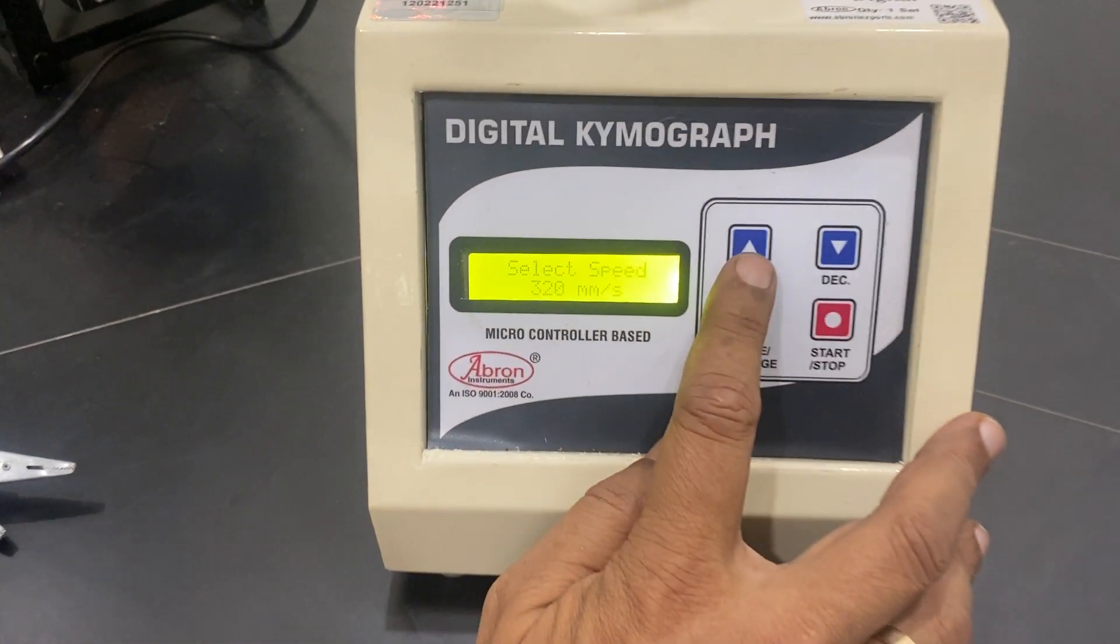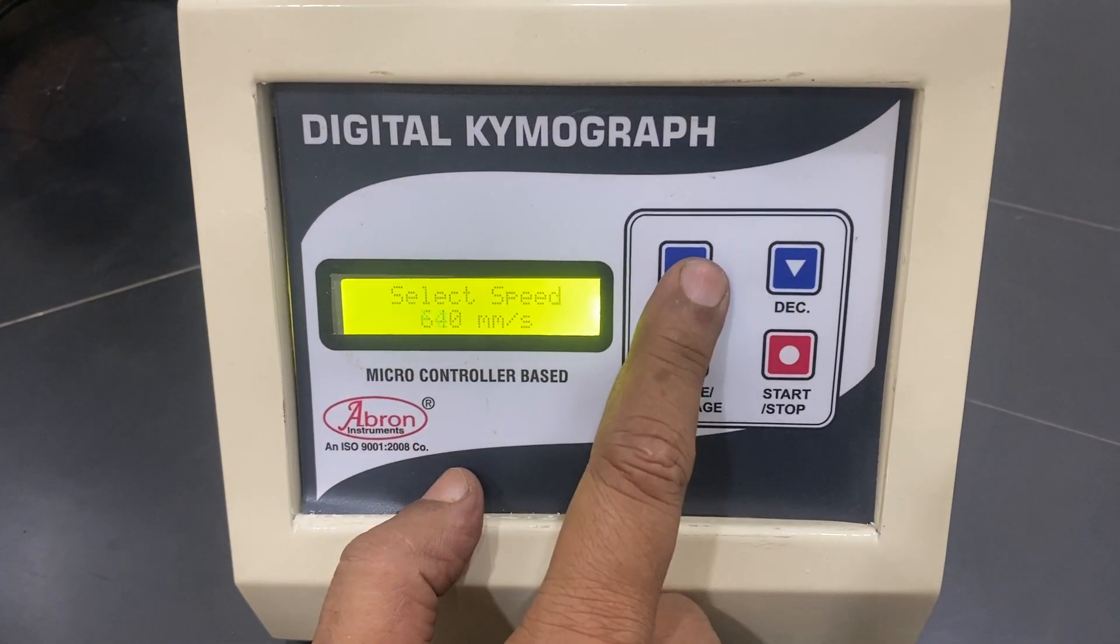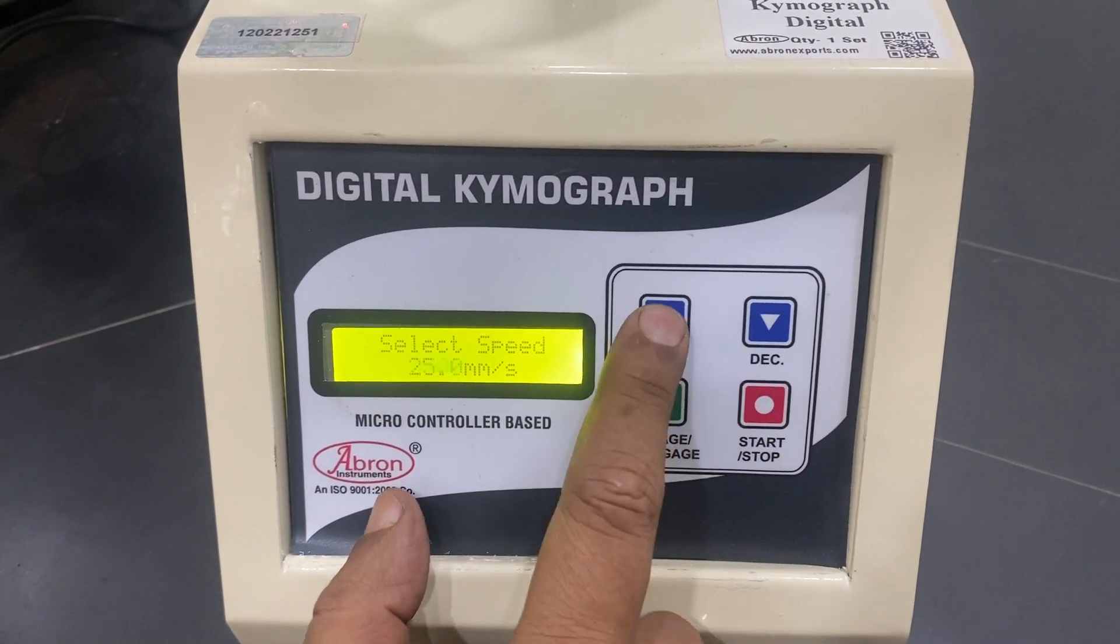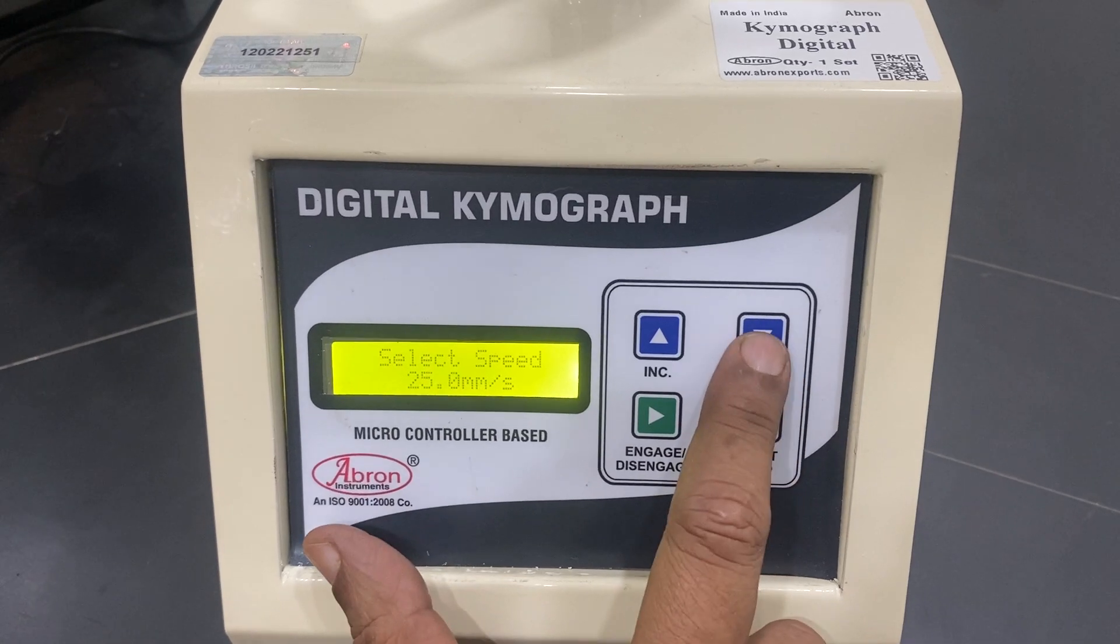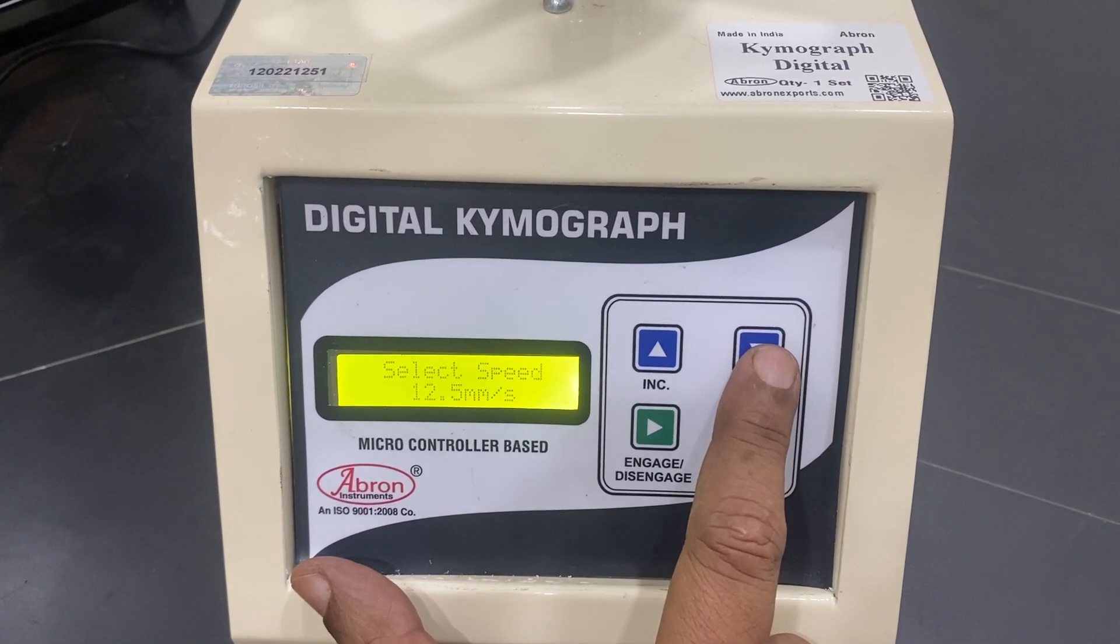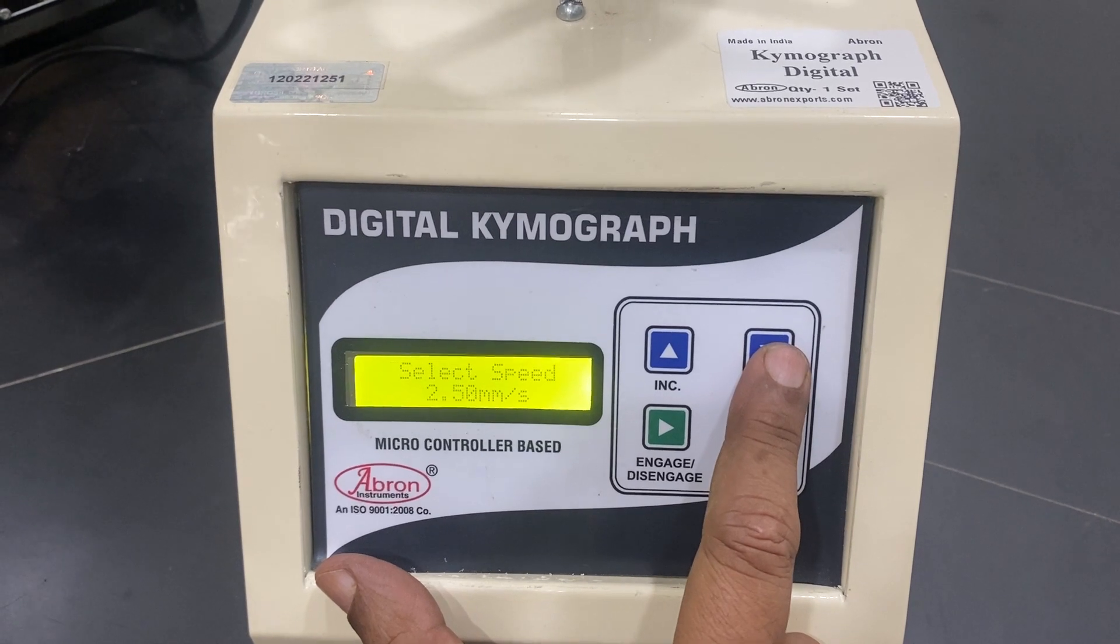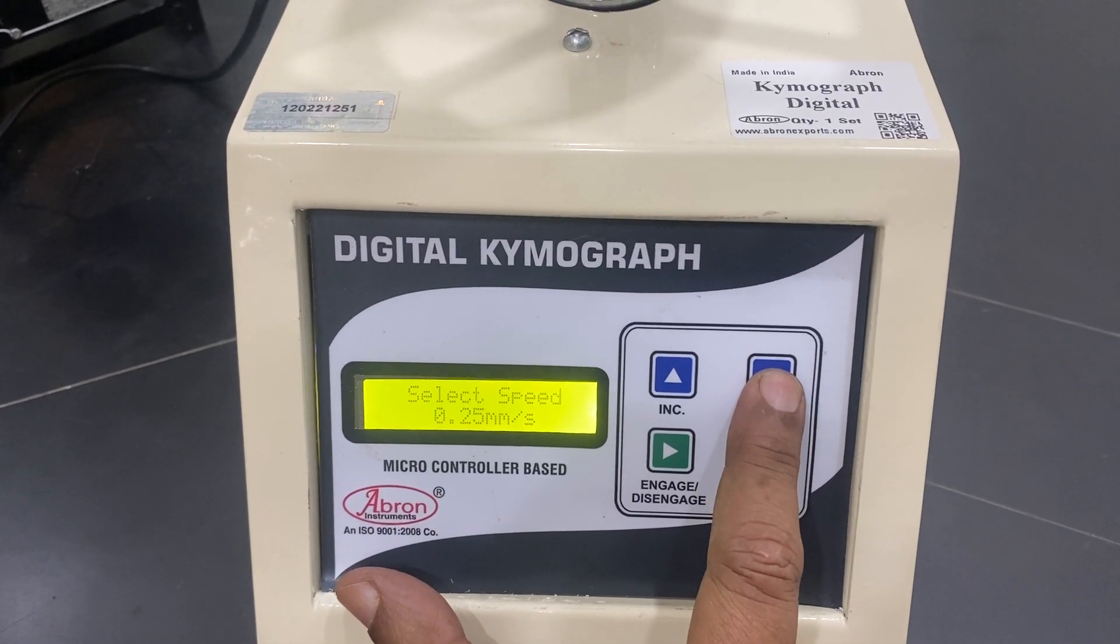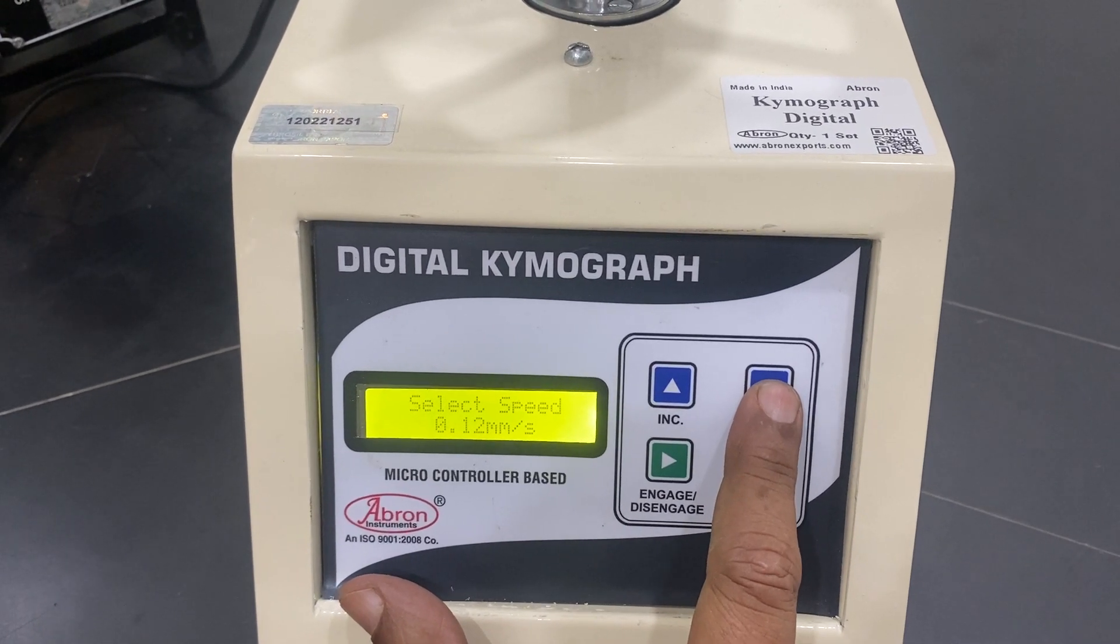Now this has different parts. One is for increasing the speed: 640 mm per second. You can reduce it to 320, then it becomes 25 mm per second, 12.5 mm, 2.5 mm, 1.25, 0.25, and 0.12. This is the last one. Eight speeds are there.